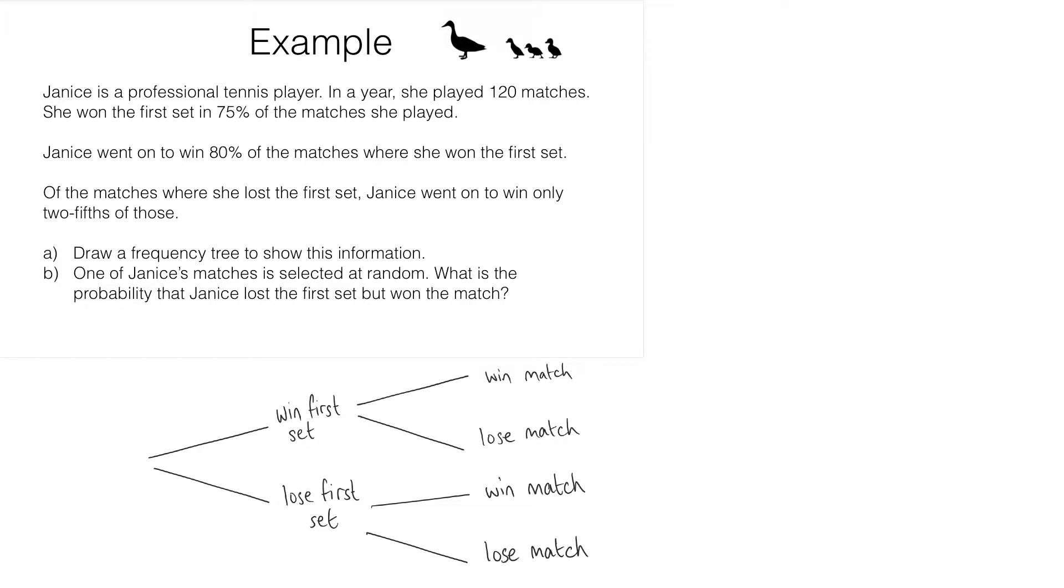This diagram shows all the possible outcomes based on the information we've been given. Now we know that she played 120 matches. She won the first set in 75% of those matches. 75% of 120 is simply three quarters of 120. One quarter of 120 is 30, so three quarters is 90. So in 90 matches out of 120 she wins the first set. That means she loses the first set in the other 30 matches. Remember she was playing a total of 120 matches, so these numbers here need to add up to 120.